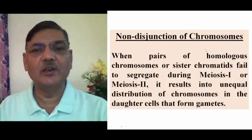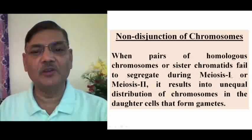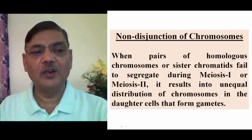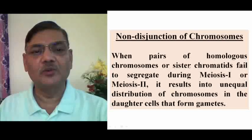Non-disjunction of chromosomes occurs when pairs of homologous chromosomes or sister chromatids fail to segregate during meiosis 1 or meiosis 2. It results in unequal distribution of chromosomes in the daughter cells that form gametes. We can understand how chromosome non-disjunction takes place by going through the diagrams.